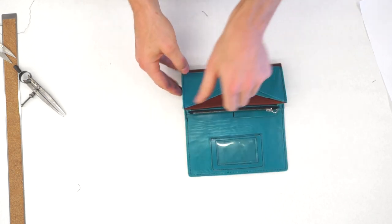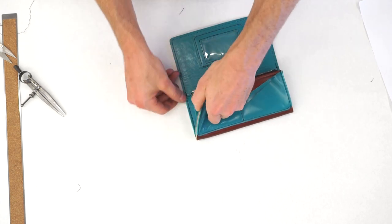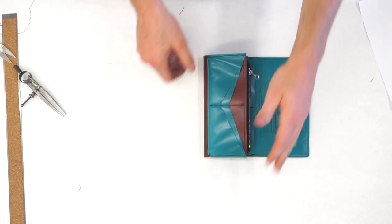All right, now that we've sewn our gusset flaps on here and right here, that pretty well completes the clutch.